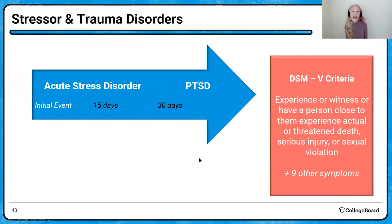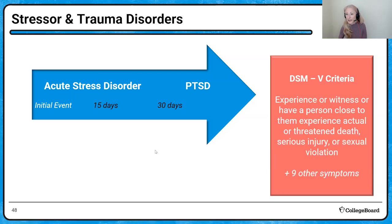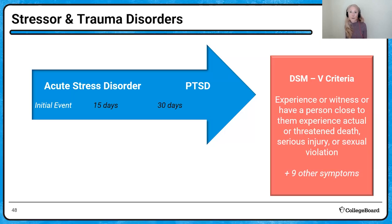Let's talk about stress and trauma disorders. You've heard of acute stress disorder and PTSD — what's the difference? The main difference is time. There's an initial stressor event. If 15 days have passed and you're feeling stressed, meeting the DSM stress criteria — nine symptoms — you could be diagnosed with acute stress disorder. But if those symptoms persist for more than 30 days, you would be diagnosed with PTSD.